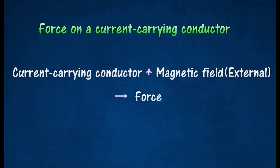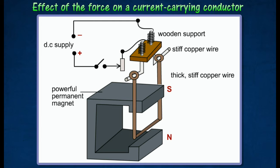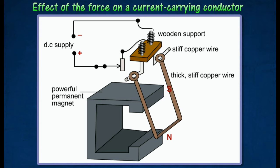This effect is also known as the motor effect. The effect of the force on a current-carrying conductor in a magnetic field can be demonstrated using the apparatus shown in the diagram. The copper wire will move towards the right-hand side when the switch is turned on, showing that a force acts on the current-carrying copper wire when it is placed in a magnetic field.